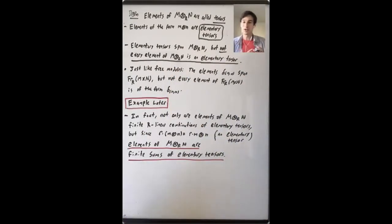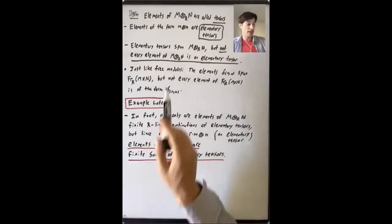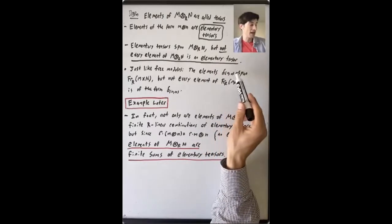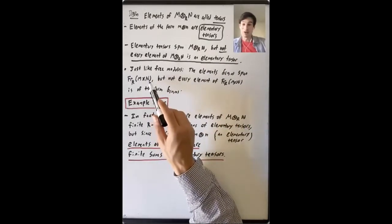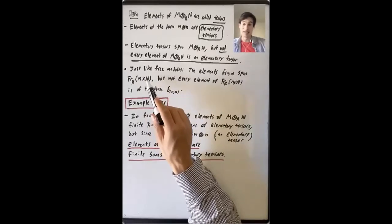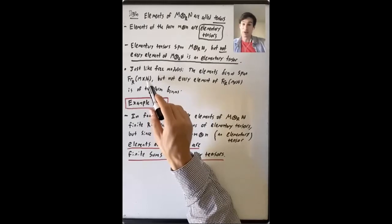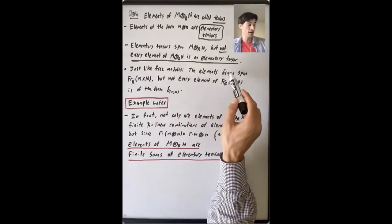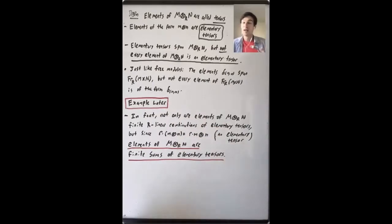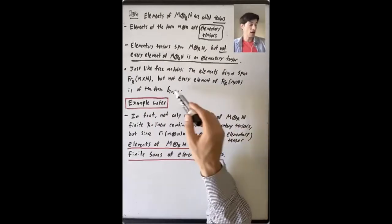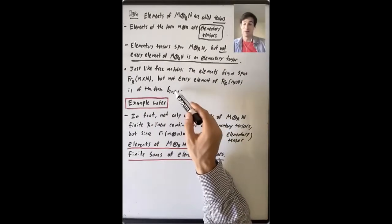To better understand why this is true, I want to draw an analogy to free modules. We have elements delta_{MN} inside this free R-module on the set M cross N, and these elements span this free module. Every element in this free module is a finite R-linear combination of these elements, but it's just not true that every element in the free module is of this delta_{MN} form.